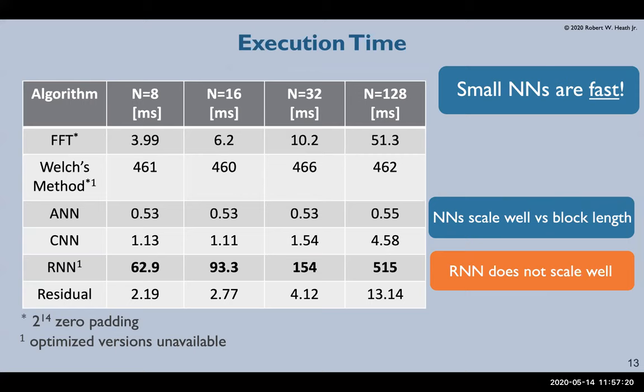Unfortunately, Welch's method and the recurrent neural network do not have the same highly optimized versions available in CUDA and TensorFlow, so these don't really compare well. Most importantly, we can see that our networks are faster than the FFT under every case,